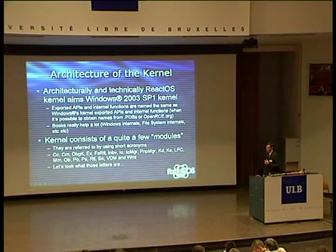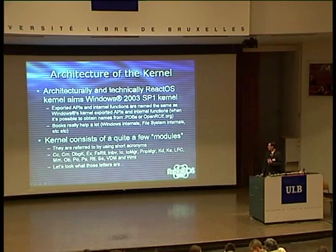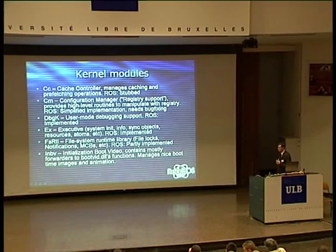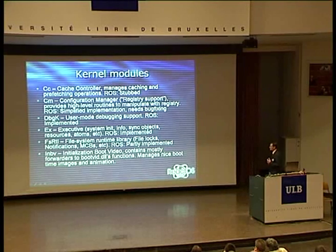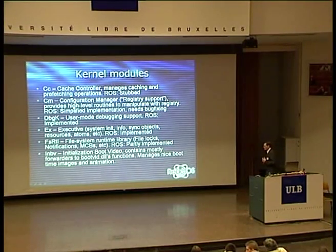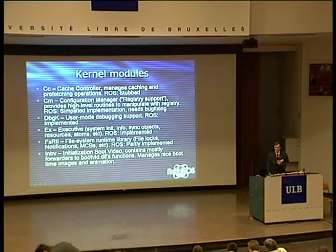The kernel itself consists of a few modules, usually referenced by two or three letters, which provide all this architecture behind the kernel. First of all there is a cache controller, which manages cache prefetching and all operations related to file system support — this is currently not implemented in ReactOS. Then there is CM, the configuration manager, which is simply speaking the support for the registry. It's in the kernel. ReactOS has a quite simplified implementation which is not optimized for speed or size, but just does its work.